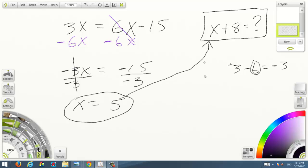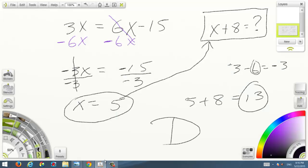Now you just have to substitute this into this. It's going to be 5 plus 8 equals 13. There you go. And that's the answer. It would be letter D, 13.